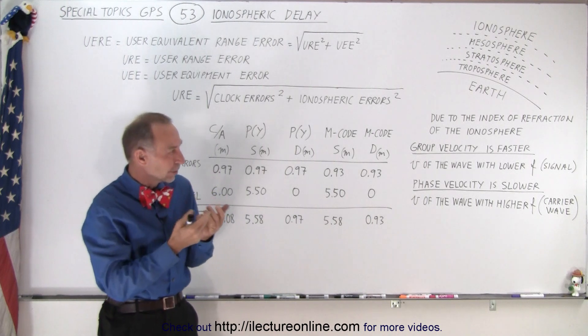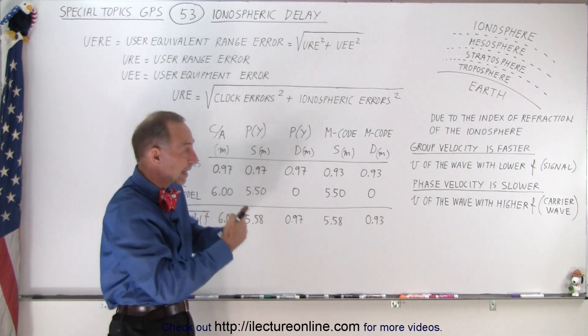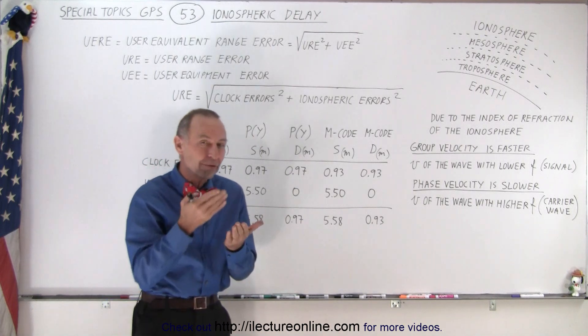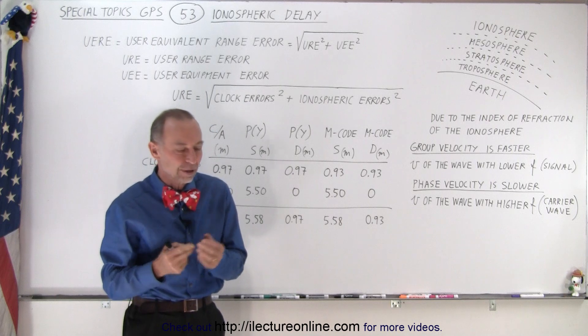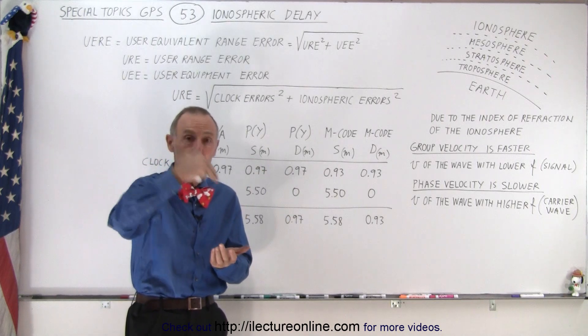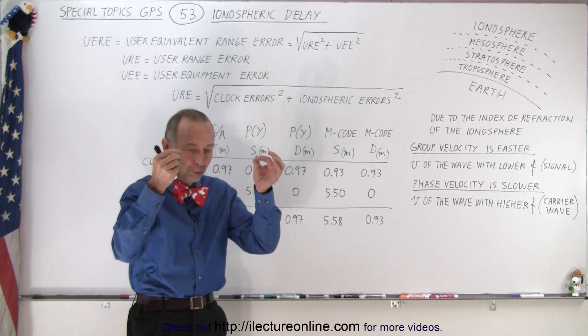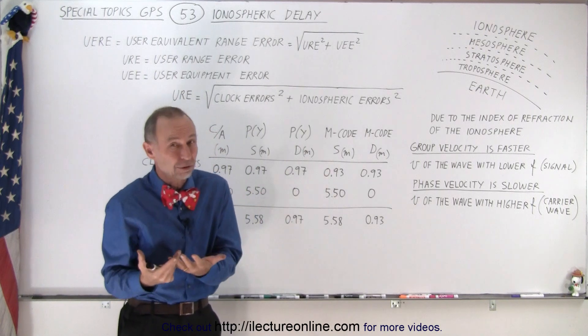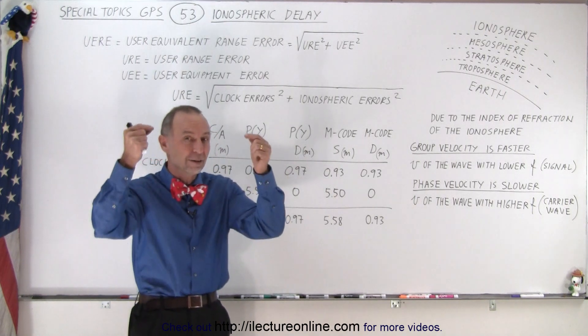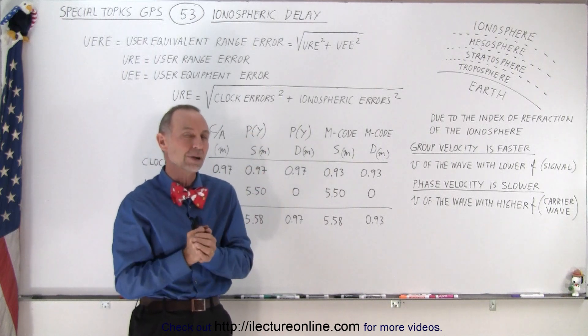Since the signal is actually part of a carrier wave, and the frequency of the signal is different than the frequency of the carrier wave, as the wave travels through the ionosphere, those two portions of the signal will have a different index of refraction, and therefore a different velocity as they move through the ionosphere.